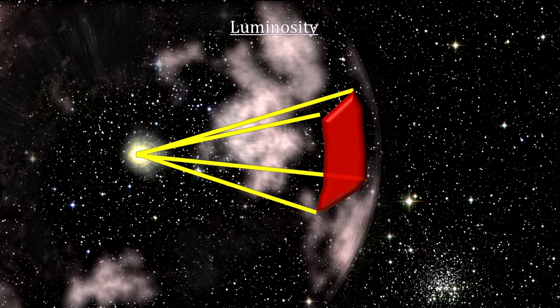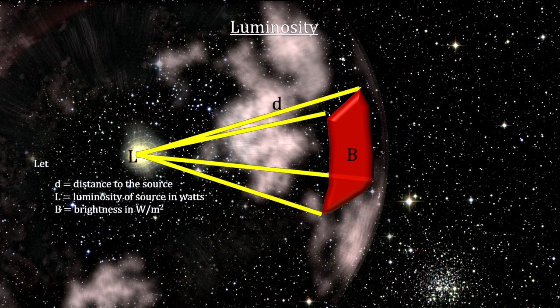Apparent brightness is measured in watts per square meter. Because light from stars spreads out over the surface area of a sphere, we can use the inverse square law to categorize luminosity for all the stars that have parallax distance information.